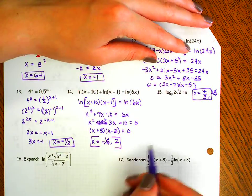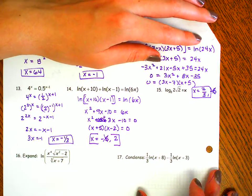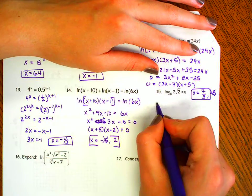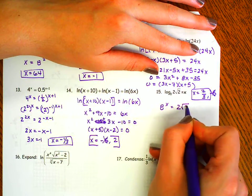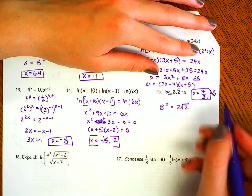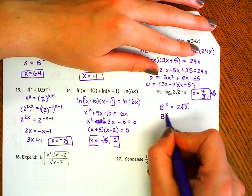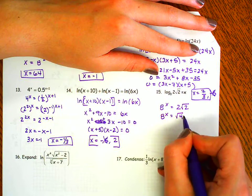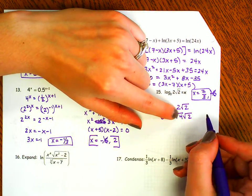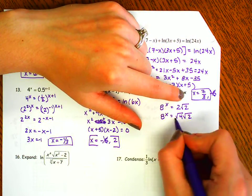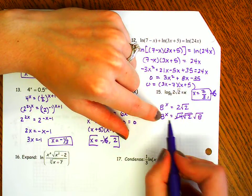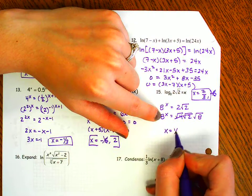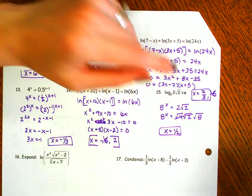Number 15. Log base 8 of 2 root 2 equals x. So it's saying 8 to the what power is going to give me 2 root 2. Now, let's rewrite this really fast. This is the same as the square root of 4, right? 2 is the same as the square root of 4. So this whole thing here is the same as the square root of 8. So what exponent will do the square root? Well, that's 1 half. Let's keep moving.